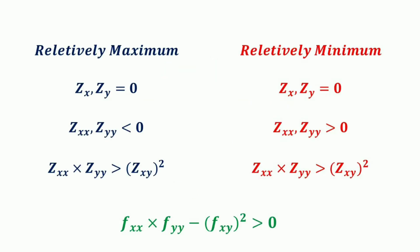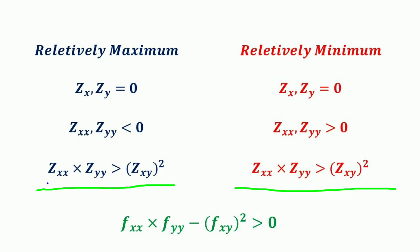The second order condition states that if both second order direct partial derivatives are negative (less than zero), then the function is relatively maximum. If both second order direct partial derivatives are positive (greater than zero), then the function is relatively minimum. At the same time, the product of the second order direct partial derivatives evaluated at the critical points must exceed the product of the cross partial derivatives — that is, z_xx · z_yy must exceed z_xy squared.